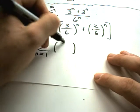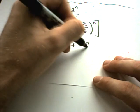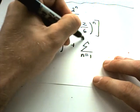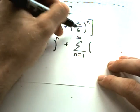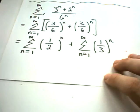So I'm going to do my 3 over 6, which is 1 over 2 to the n, plus n equals 1 to infinity. 2 over 6, that's the same thing as 1 third to the n.